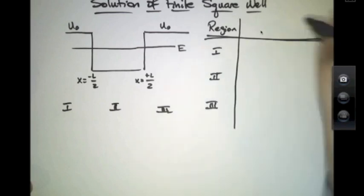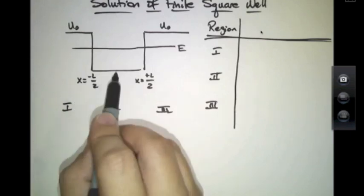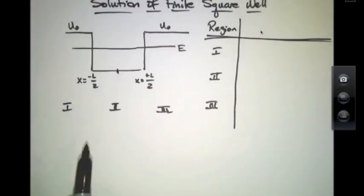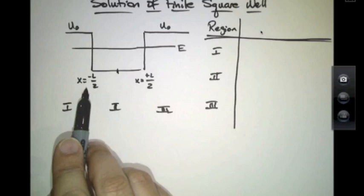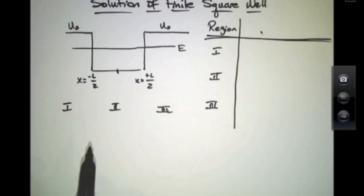We know from our previous work that there are different types of solutions of the Schrödinger equation here. This particular potential is symmetric around the origin, so the origin x equals zero is right there. And since the potential well goes to plus U₀ at minus l over 2 and plus l over 2, it's symmetric.